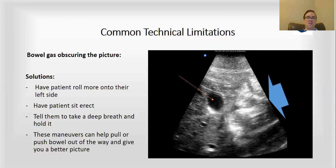Another way to do it is to have the patient sit erect — that can also allow the bowel to fall away from the gallbladder and give you a nicer view. Or you can have them take a deep breath and hold it, and the diaphragm will push the liver and the gallbladder down and get it out from under the ribs so you can see it a little bit better.